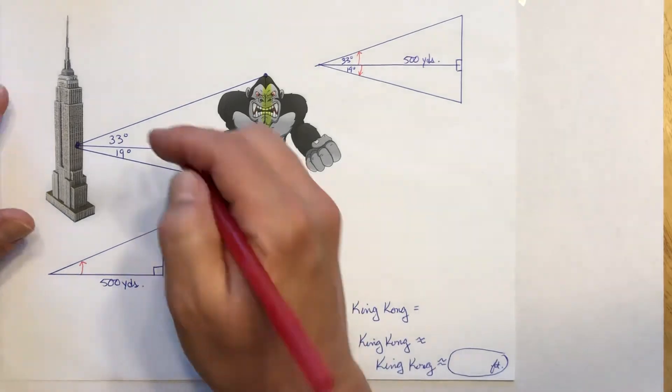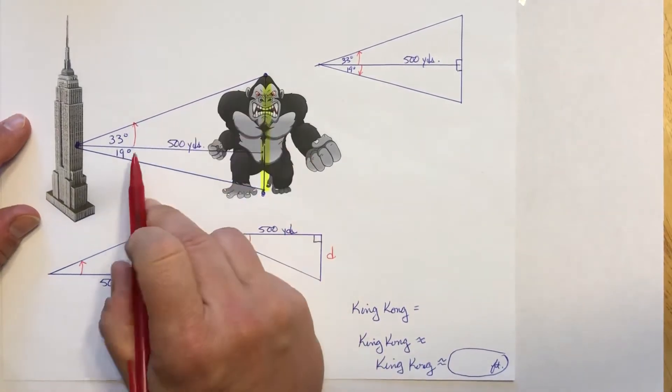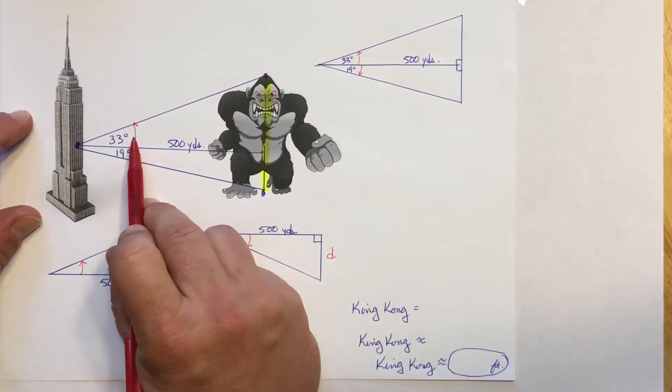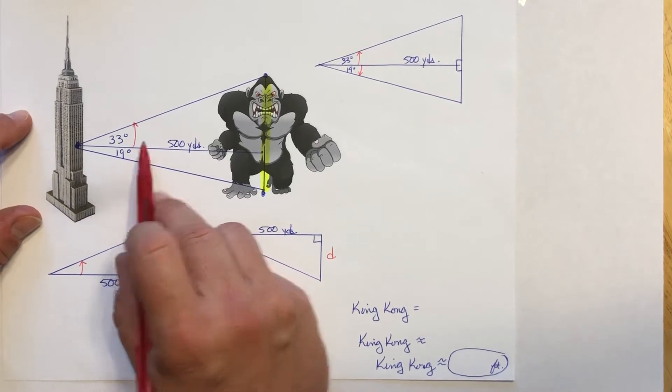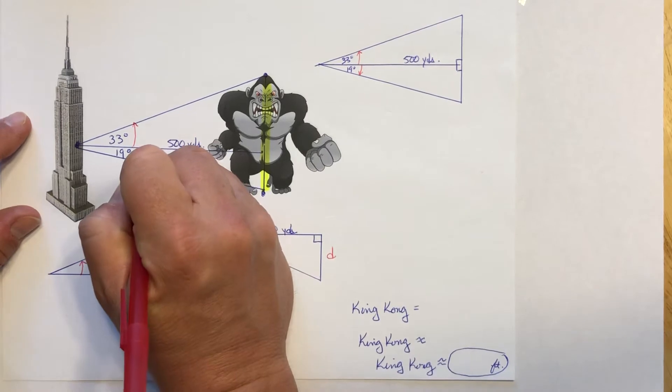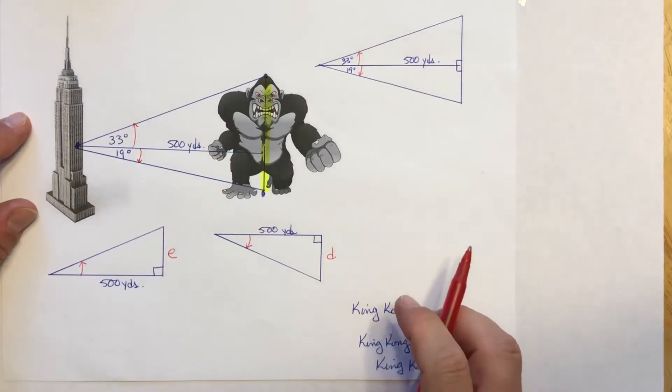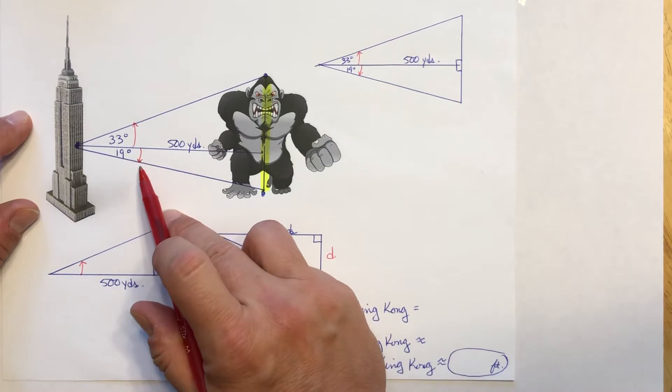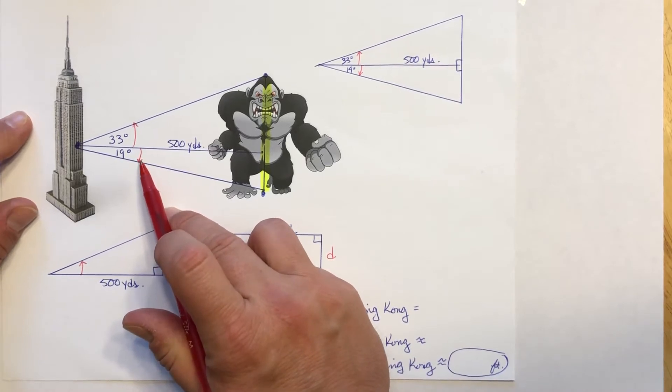I'm going to use 33 degrees as my angle of elevation because that is the number of degrees above the horizontal. So you'll see my arrow here. I'm gonna use the 19 degrees as my angle of depression because by definition it is the number of degrees below the horizontal looking downwards.